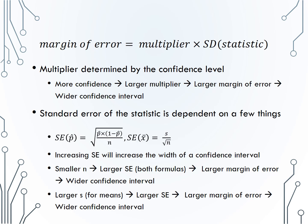As stated before, the margin of error is the multiplier times the standard deviation of the statistic. The multiplier is determined by the confidence level. If we want a higher confidence level, we will use a larger multiplier. Notice that the multiplier for 95% confidence is 1.96 in a normal distribution versus 99% confidence, more confidence, is 2.576, a larger multiplier.